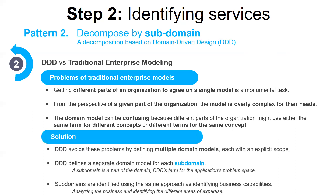DDD avoids these problems by defining multiple domain models, each with an explicit scope. DDD defines a separate domain model for each subdomain. Subdomains are identified using the same approach as identifying business capabilities, which is analyzing the business and identifying the different areas of expertise. The end result is very likely to be subdomains that are similar to the business capabilities.